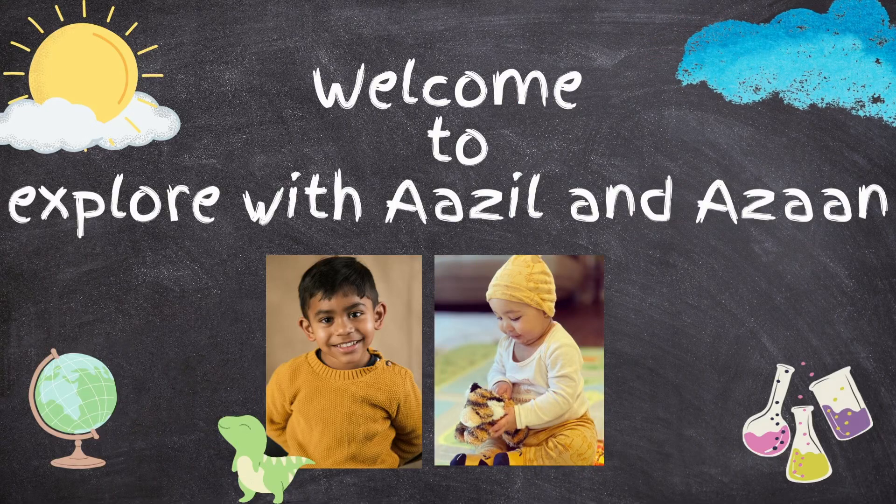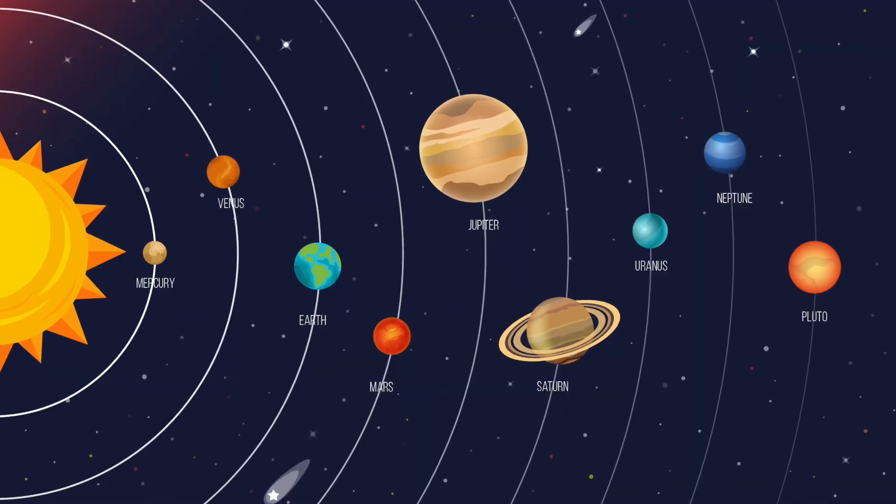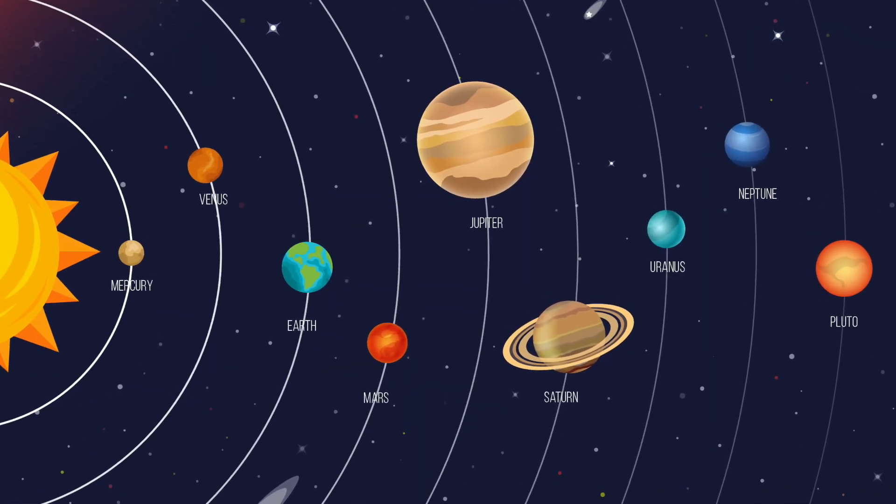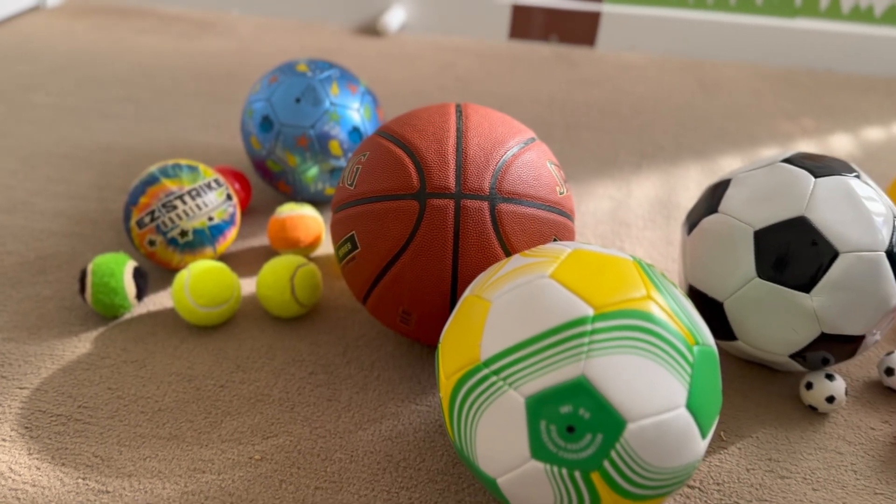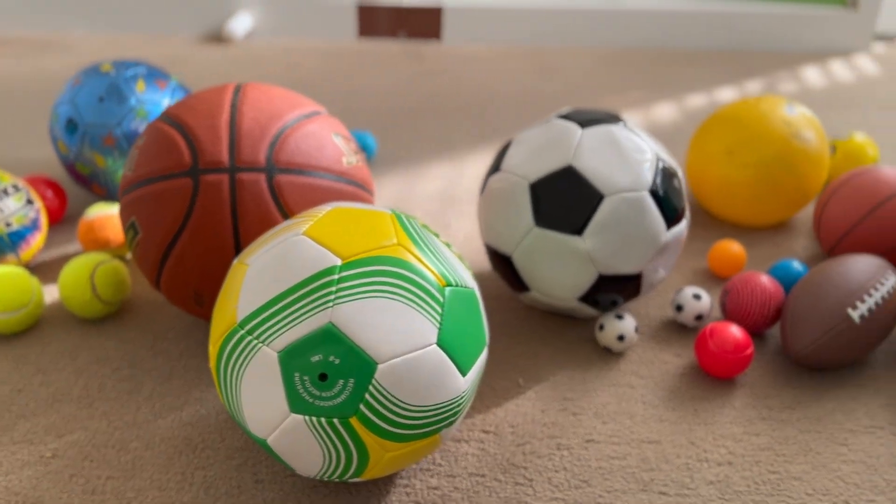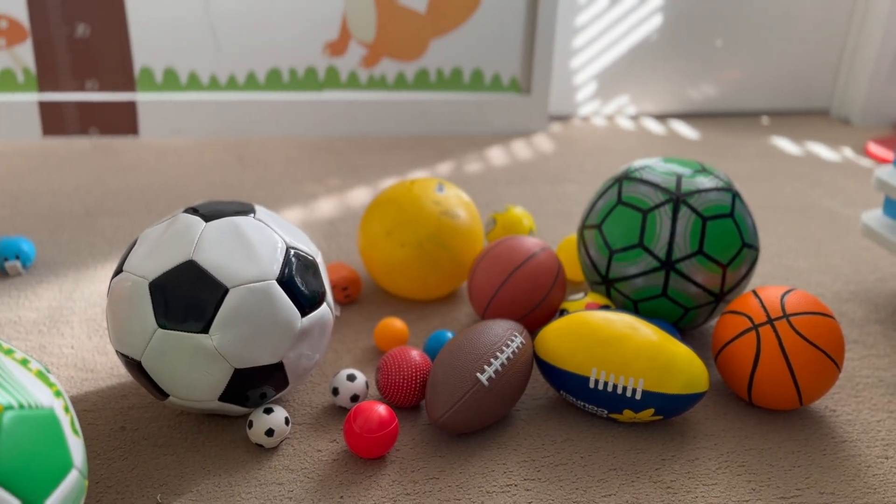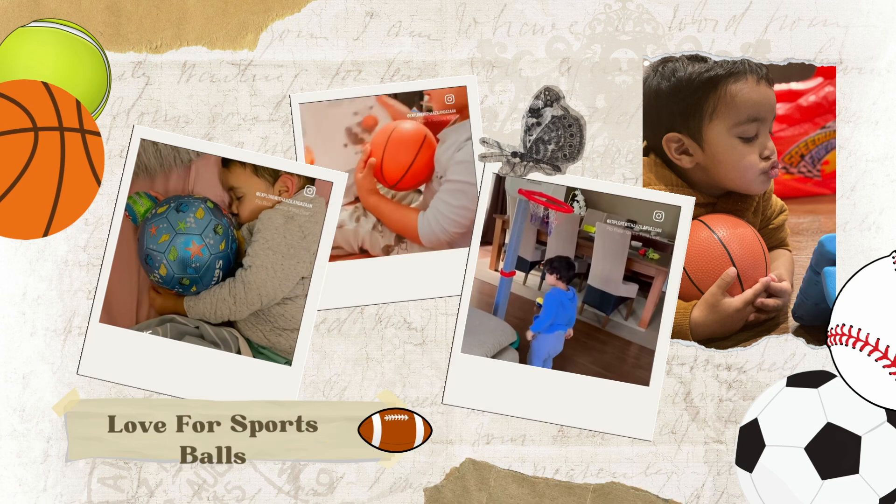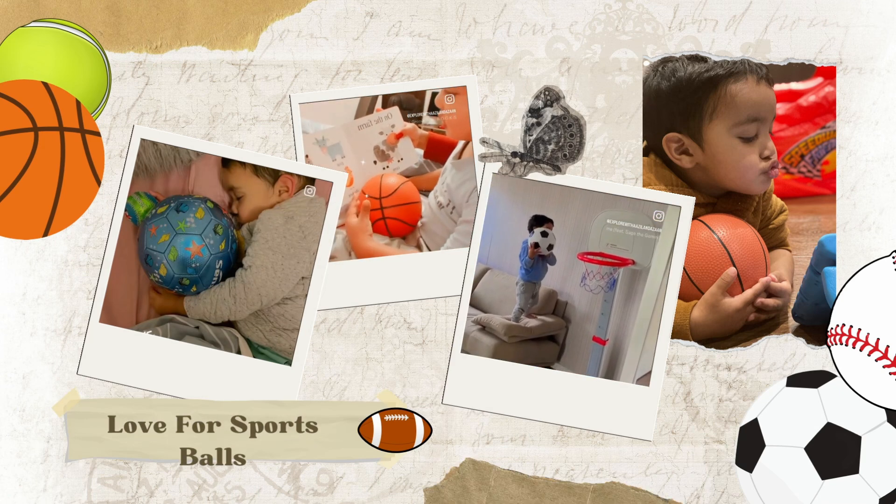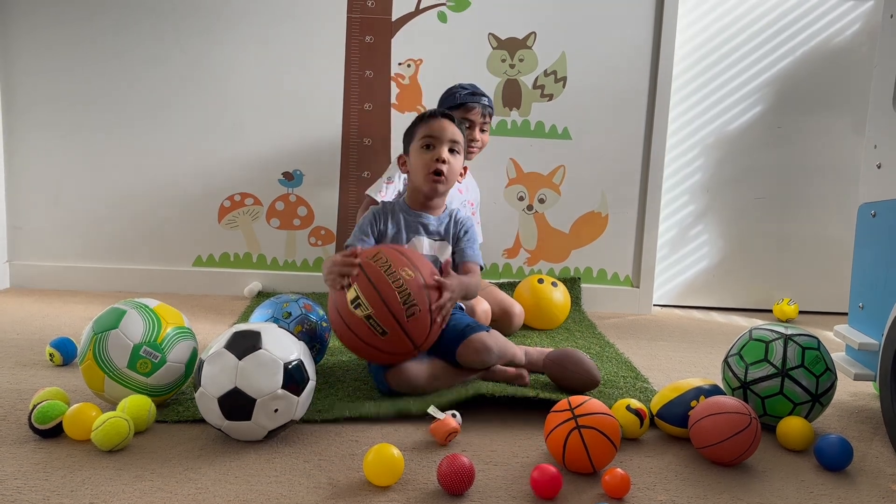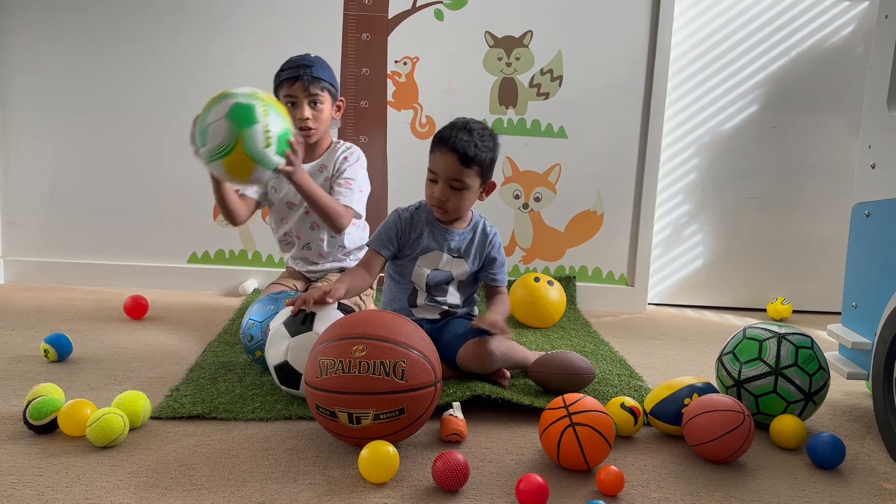Hello everyone and welcome to Explore with Adil and Azan. Today we are going to embark on a fascinating journey through our solar system as we compare the size of planets to something much more familiar: sports balls. This video is dedicated to my little brother who simply loves sports balls. Mum and dad have spoiled him with all kinds of sports balls. You name it, he has it.